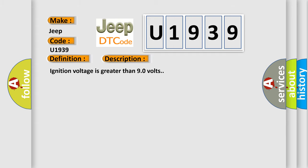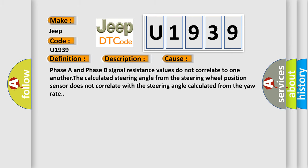Ignition voltage is greater than 9.0 volts. This diagnostic error occurs most often in these cases: Phase A and phase B signal resistance values do not correlate to one another.